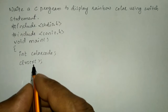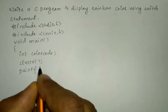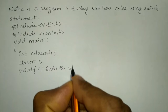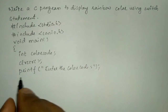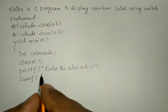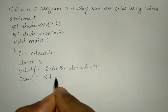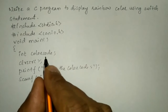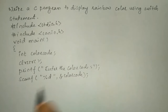Now I'll ask the user to enter the color code using a printf statement. I'll write printf with a double quotation mark and write 'enter the color code', then put a semicolon. Now we'll write a scanf statement to receive input from the user — in double quotation marks the format specifier %d, then a comma, ampersand, and the variable name color code. Close the bracket and put a semicolon.